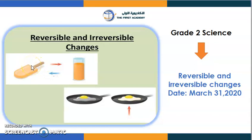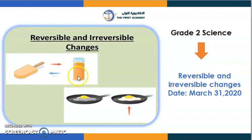That's called reversible changes — it repeats its cycle. When you melt it or freeze it, it turns back to its original form.